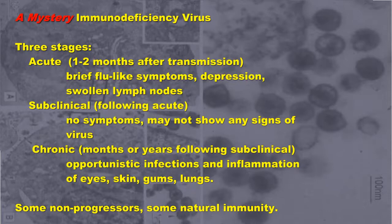This is followed by a subclinical stage where we have no symptoms and may not even show signs of virus, which leads to the chronic phase where we have opportunistic infections and inflammation of the eyes, skin, gums, and lungs. There are also some known non-progressors and some natural immunity.